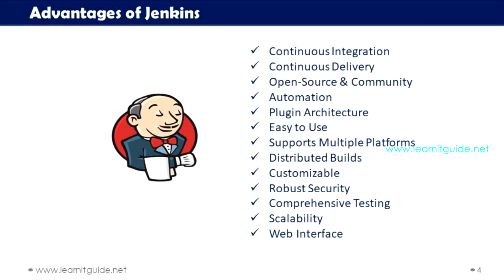Continuous integration, that is CI. Jenkins automates the process of integrating code changes into a shared repository, allowing for frequent and automated testing of code. It detects and reports integration issues early in the development process, improving software quality. CI in Jenkins reduces the risk of integration problems during the later stages of development.